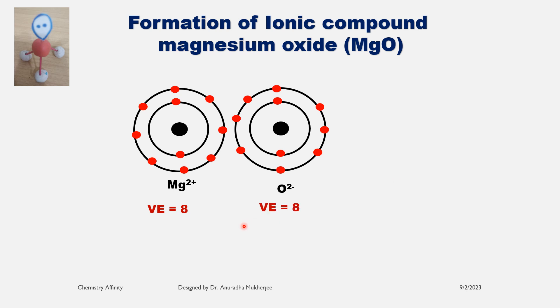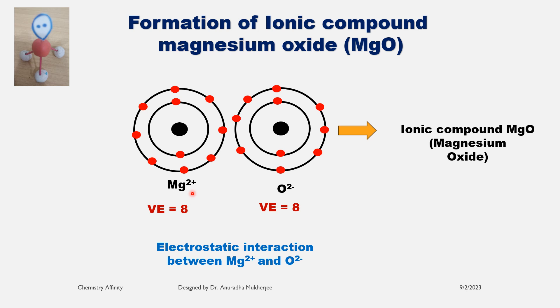So when magnesium donates its two electrons to oxygen, magnesium becomes magnesium 2+ cation and oxygen becomes O2- anion.